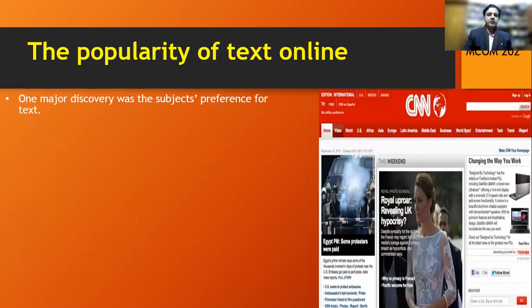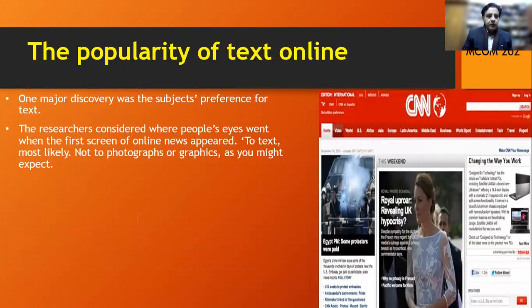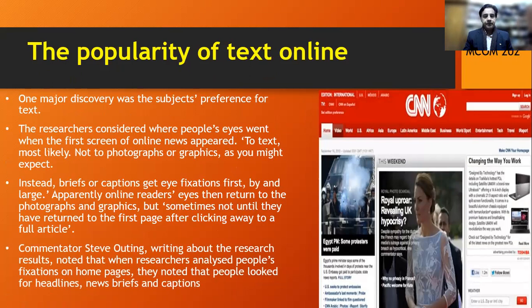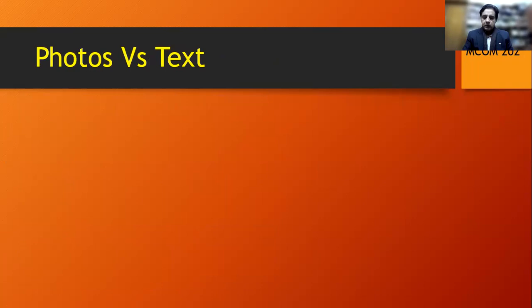One major discovery was subjects' preference for text. The research considered where people's eyes went when the first screen of online news appeared — to text, most likely, not to the photographs or graphics as you might expect. Instead, briefs or captions get eye fixations first. Online readers' eyes then return to photographs and graphics, but sometimes not until they have returned to the first page after taking a detour to the full article. Commentator Steve Outing, writing about the research, noted that when researchers analyzed people's fixations on home pages, they noted that people looked for headlines, news briefs and captions instead of pictures and graphs.